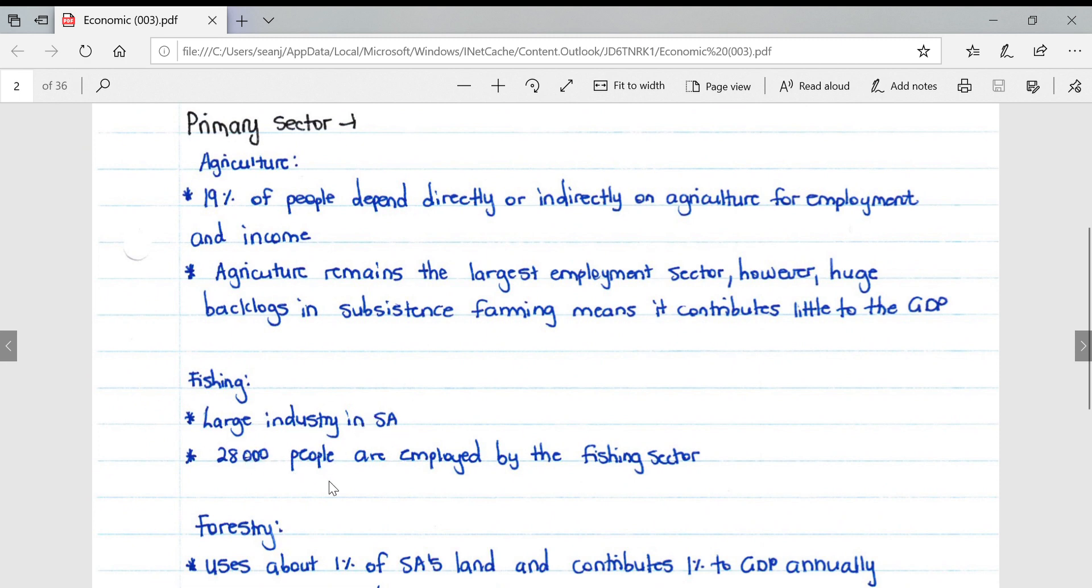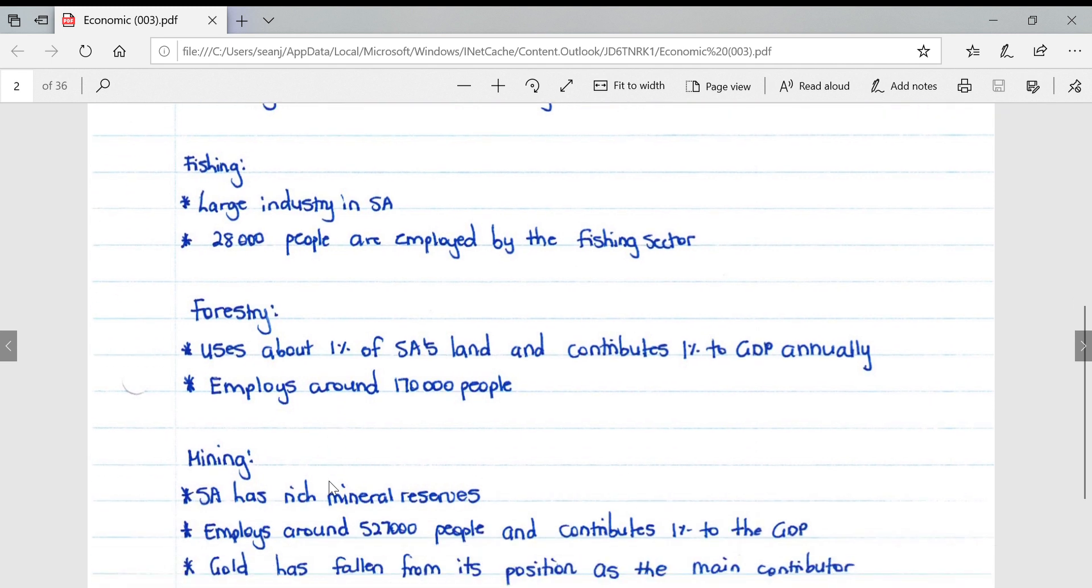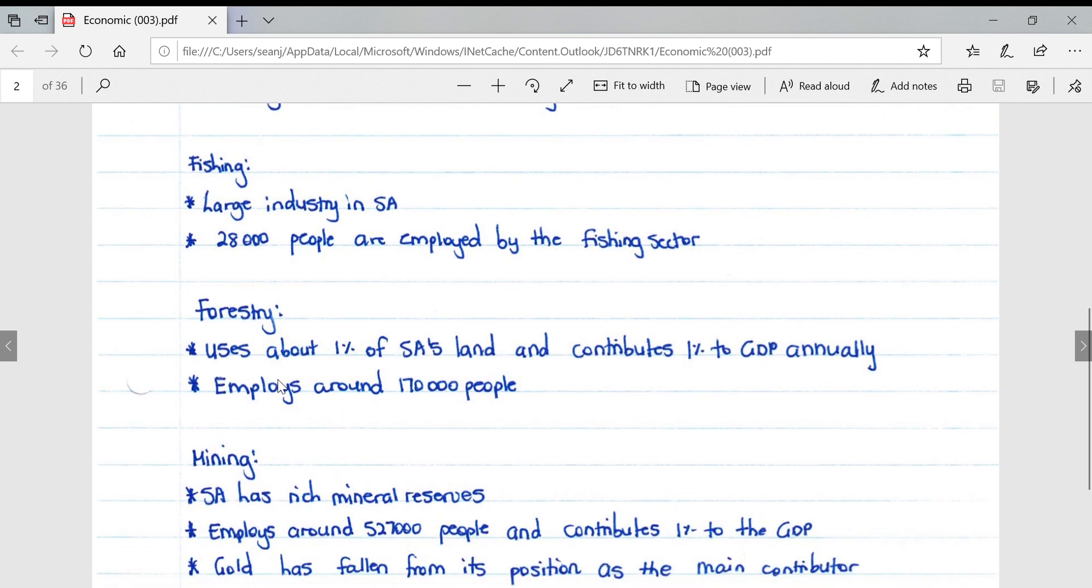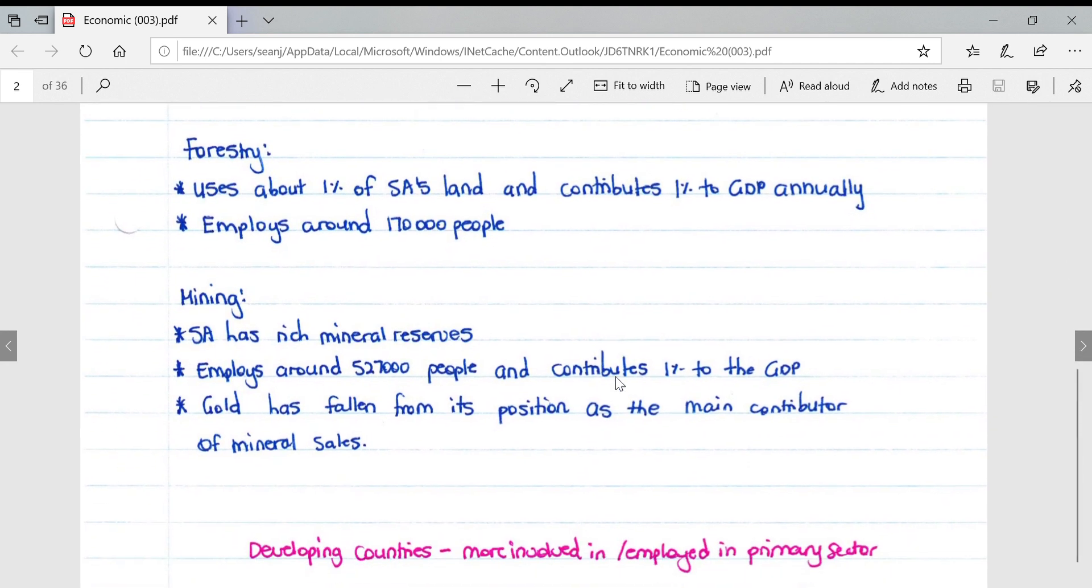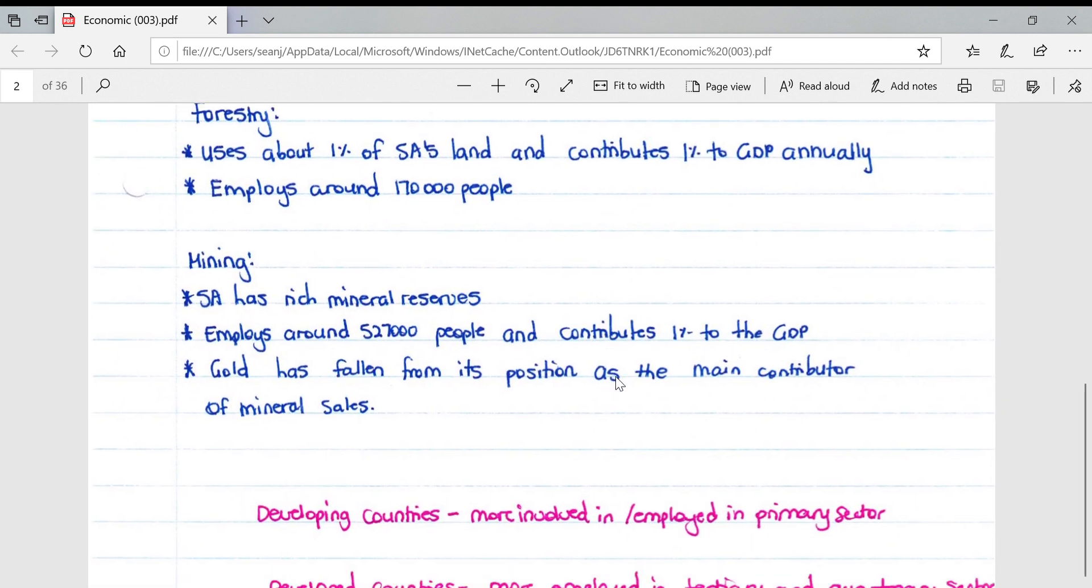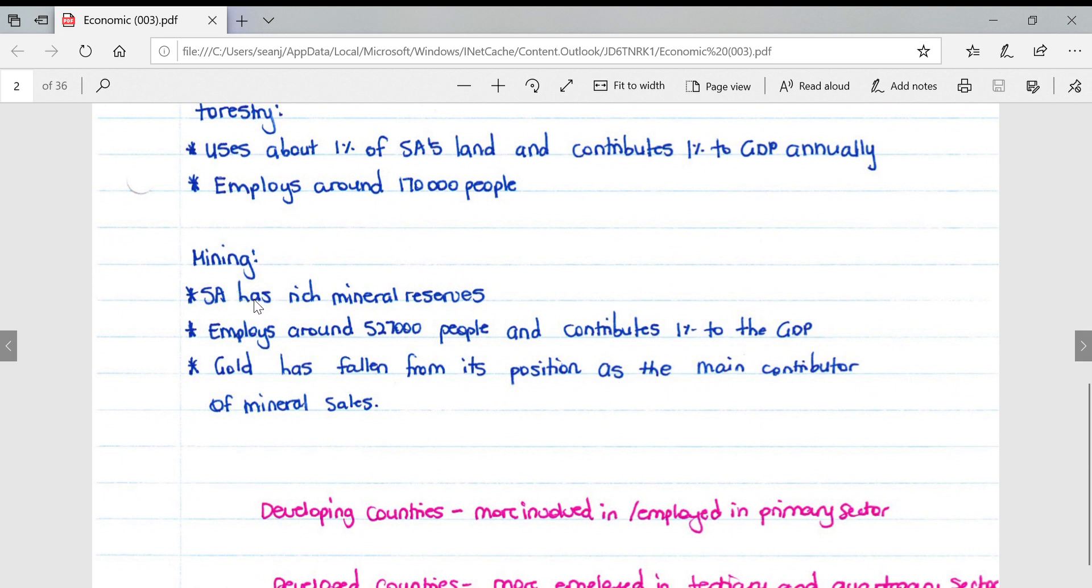For fishing, it's a large industry in South Africa - 28,000 people are employed by the fishing sector. Forestry uses about 1% of South Africa's land and contributes 1% to the GDP annually, employing around 170,000 people. South Africa has rich mineral reserves, employing around 527,000 people and contributing about 1% to the gross domestic product.